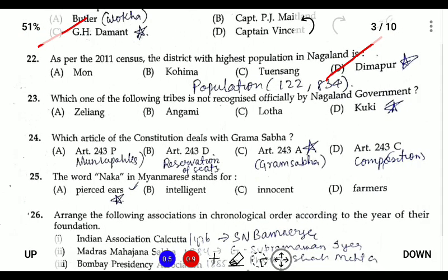Question twenty-three: which of the following tribes is not officially recognized by the Nagaland government? The answer is Kuki. There are 16 officially recognized tribes in Nagaland. Question twenty-four: which article of the Indian Constitution deals with Gram Sabha? The answer is Article 243A. Article 243B deals with municipalities, 243D with reservation in Panchayats, and 243C with composition.